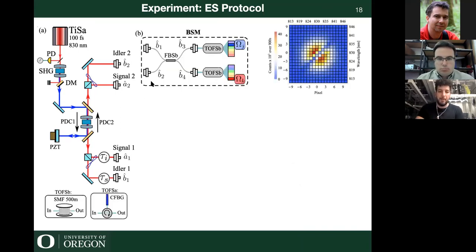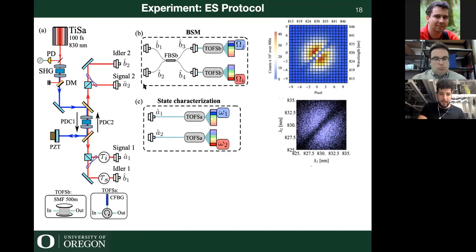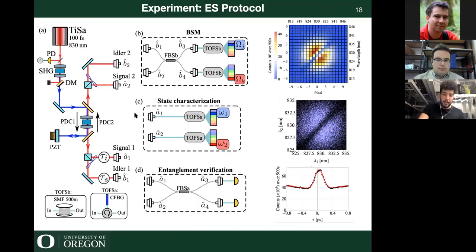We can measure the joint spectral intensity of each source and see the entanglement — anti-correlations. Fitting a Gaussian to this is how we generate all our simulations. For the entanglement swapping, we take idler two and idler one, put them through a beam splitter, measure the spectrum at the output using the fiber spool, and generate a distribution in J and K. For each of these, we simultaneously record the joint spectrum of signal one and signal two. To verify the entanglement, we put them through another beam splitter, scan another time delay, and measure two-photon interference.